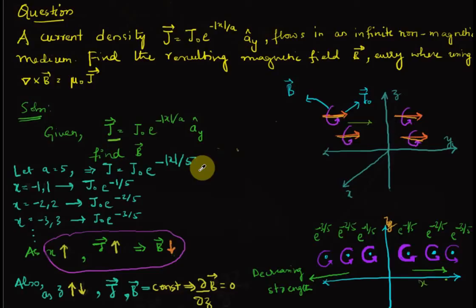The problem is to find the magnetic flux density B given a current density J. The current density J equals J_0 times e to the power of |x|/a, flowing in the y direction in an infinite non-magnetic medium. Find the resulting magnetic flux density B everywhere using del cross B equals mu_0 times J.